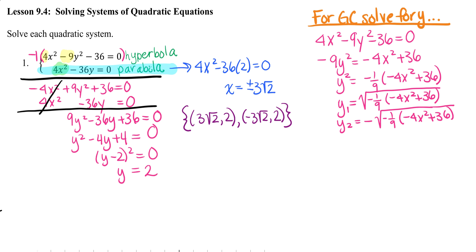If you do that, you would end up completely simplifying y1 and y2. You're going to end up with y1 as 2 thirds times the square root of x squared minus 9.